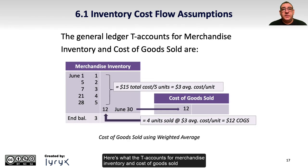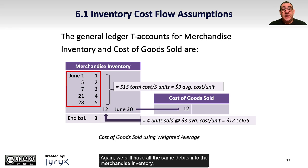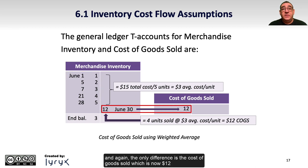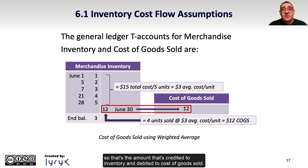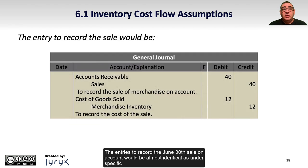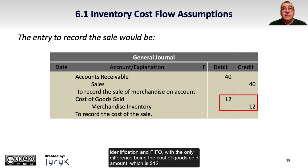The T-accounts for merchandise inventory and cost of goods sold under the weighted average cost flow assumption show the same debits into merchandise inventory, with the only difference being the cost of goods sold, which is now $12 based on the weighted average calculation. The entries to record the June 30 sale on account are almost identical to specific identification and FIFO, with the only difference being the cost of goods sold amount of $12.